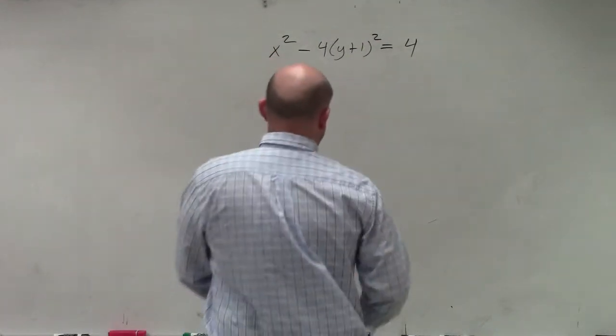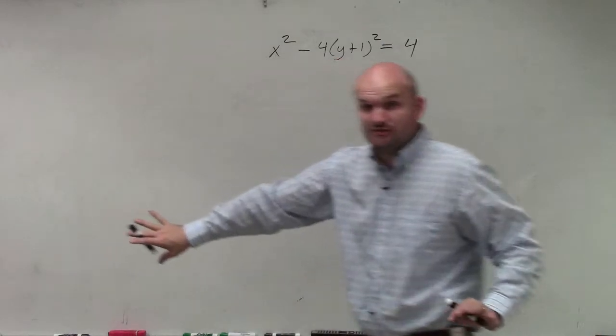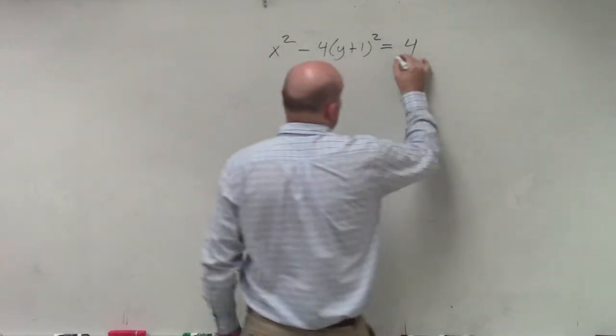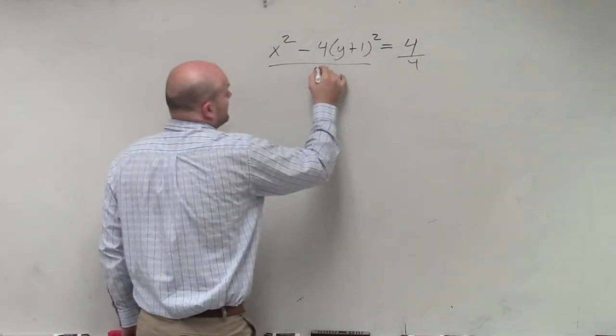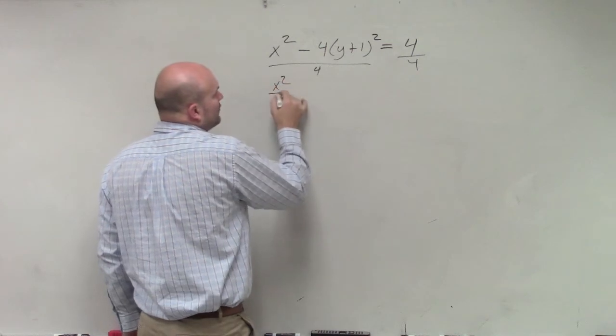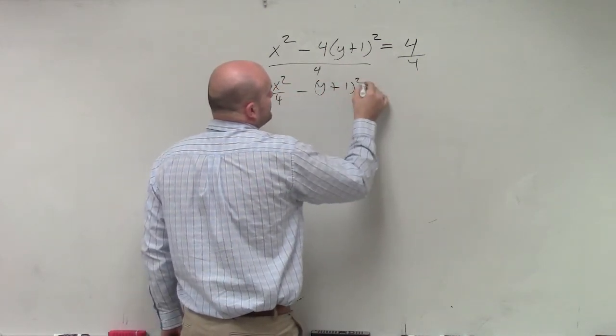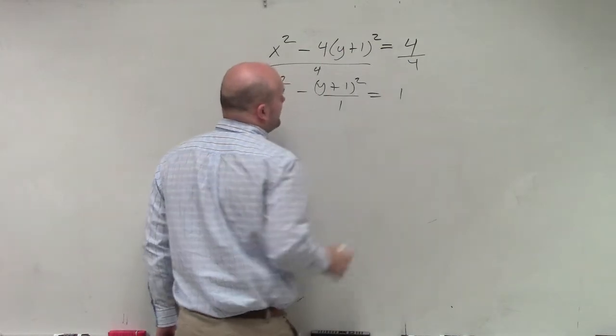The first thing I want to do in this case is, again, write this in our conic section form. So the first thing I'm going to do is divide by 4 on both sides. Therefore, I have x squared over 4 minus y plus 1 squared over 1 equals 1.